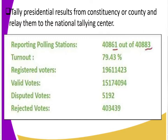Returning officers also get to tally presidential results from the constituency or county and relay them to the national tallying center. Remember, our national tallying center is Bomas of Kenya — that is where the national tallying center is located. The returning officers tally presidential results at the constituency level, then send those results to the national tallying center at Bomas of Kenya.